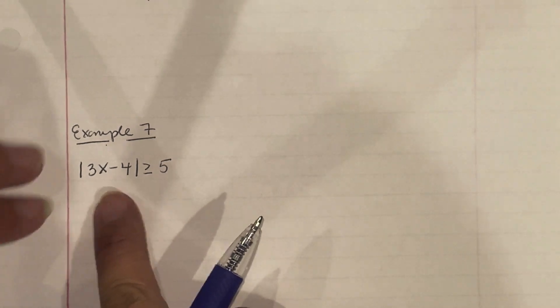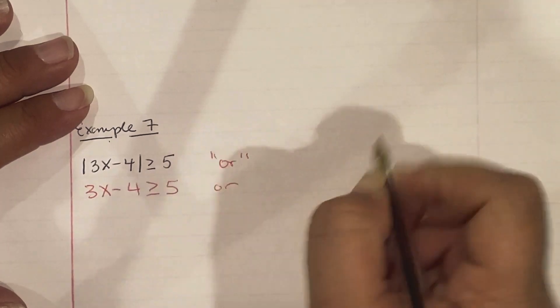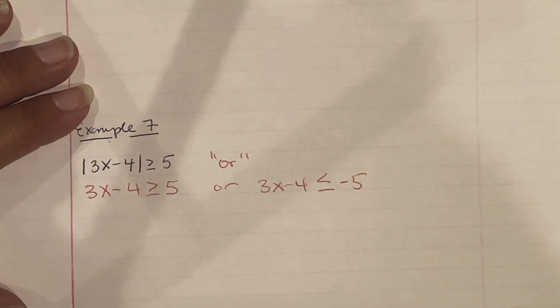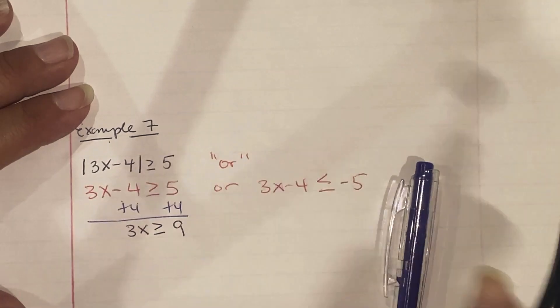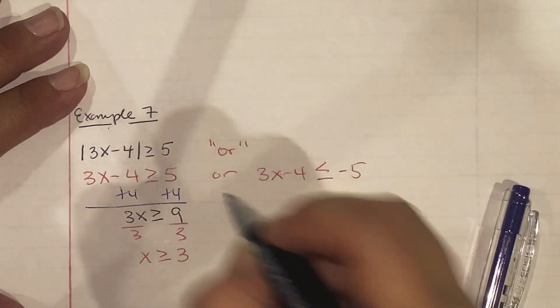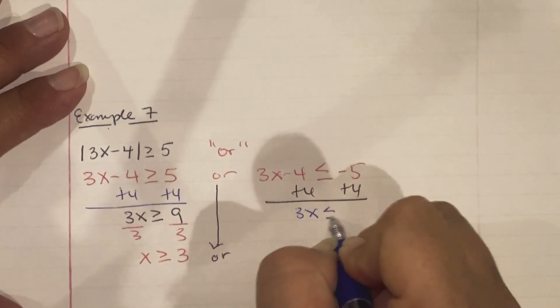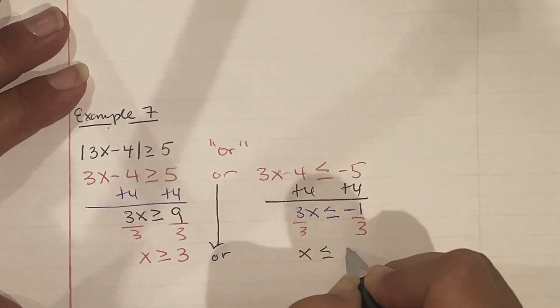Example 7: absolute value of 3x minus 4 is greater than or equal to 5 — this is our OR statement. We write two cases: 3x minus 4 greater than or equal to 5, OR 3x minus 4 less than or equal to negative 5 (flip the inequality and make the number negative). First case: add 4, getting 3x ≥ 9, divide by 3, x ≥ 3. Second case: add 4, getting 3x ≤ negative 1, divide by 3, x ≤ negative one-third.